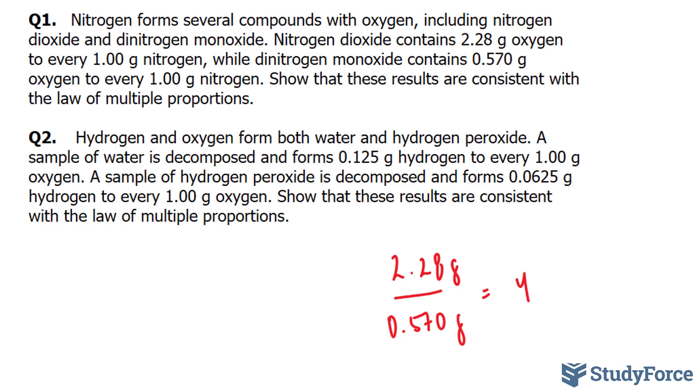Let's move on to question 2. In question 2, we're asked, hydrogen and oxygen form both water and hydrogen peroxide, H2O2. A sample of water is decomposed and forms 0.125 grams of hydrogen to every 1 gram of oxygen. A sample of hydrogen peroxide is decomposed and forms 0.0625 grams of hydrogen to 1 gram of oxygen. Show that these results are consistent with this law.